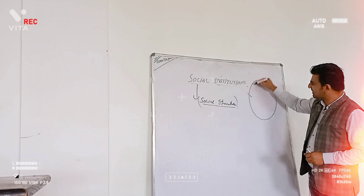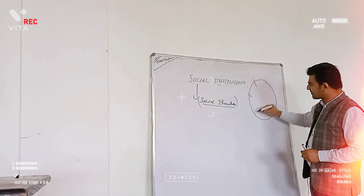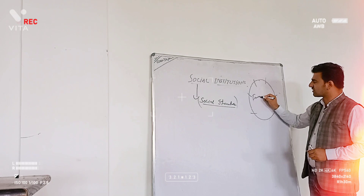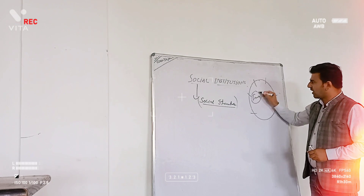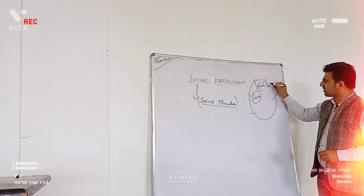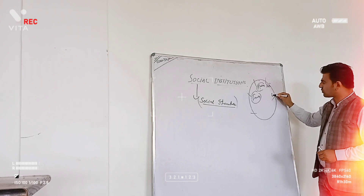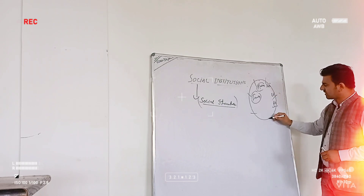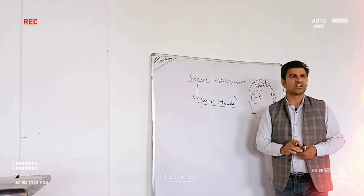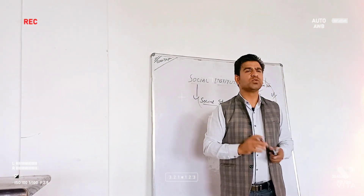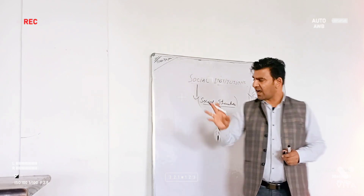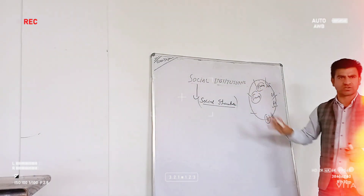When talking about social institutions, we have family as one social institution, marriage as another, then friendship, education, politics, and moralism. All these various social institutions have a set type of structure.